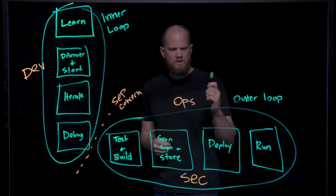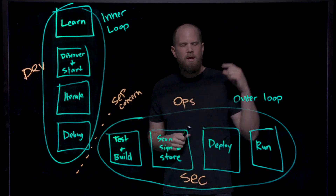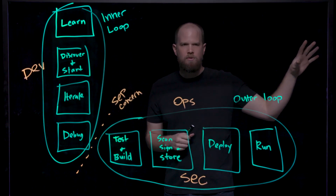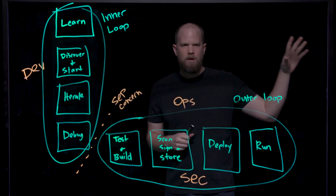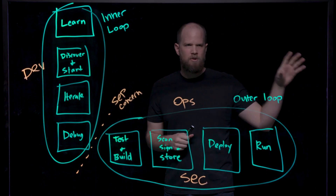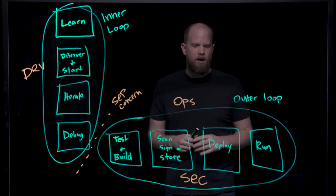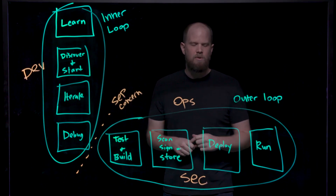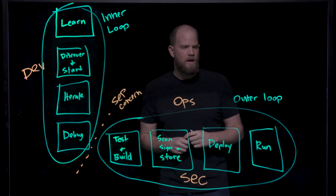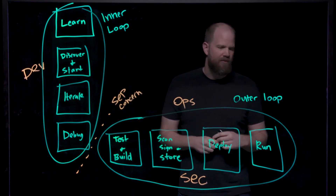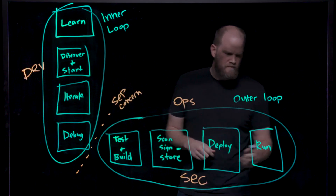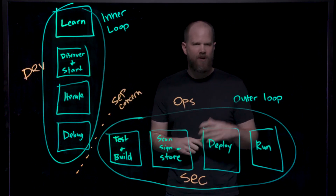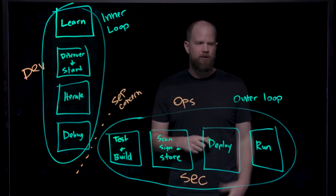Then let's get to deploy. Deploy is the act of actually pushing your code out to production environments — whether that's multiple clusters, single cluster, whatever — taking that and pushing it out easily across data centers or single environments. And then finally, run — this is the runtime aspect of running your application at scale in production.